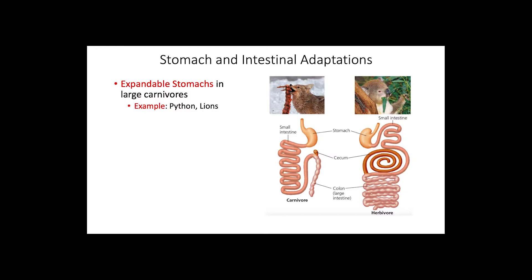The stomach and intestines also present some adaptations, especially regarding their size. Large carnivores have expandable stomachs, allowing them to wait a long time between meals and to eat as much as possible when they catch prey. A python, for example, will use its expandable stomach to eat a whole gazelle. In herbivores and omnivores, the digestive tract is often very long compared to carnivores, because plant material is more difficult to digest, so a longer tract provides more surface area for absorption.